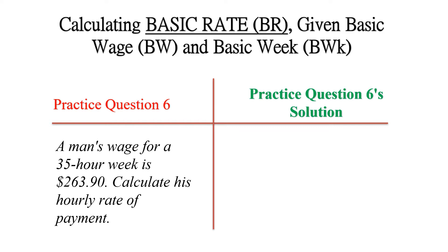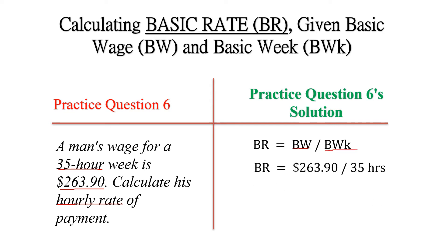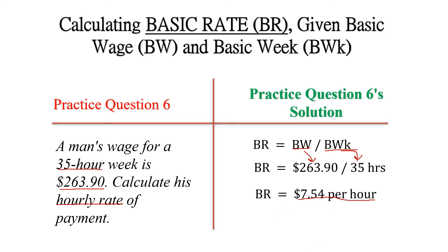Here is another practice question. A man's wage for a 35-hour week is $263.90. Calculate his hourly rate of payment. The hourly rate is the same as the basic rate. So basic rate equals basic wage divided by basic week: $263.90 divided by 35 hours gives us $7.54 per hour. That is the man's hourly rate of payment.